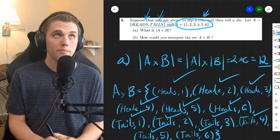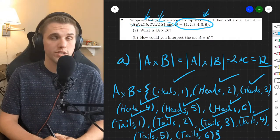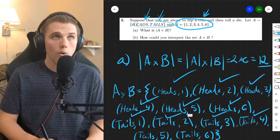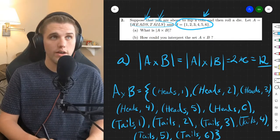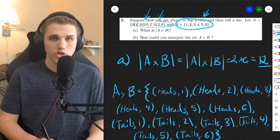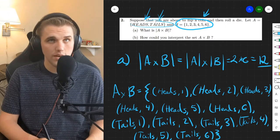Now let's do part B. Part B says how can you interpret the set A cross B? Well, we have A cross B in front of us right here. And so let's try to interpret what this could possibly mean.